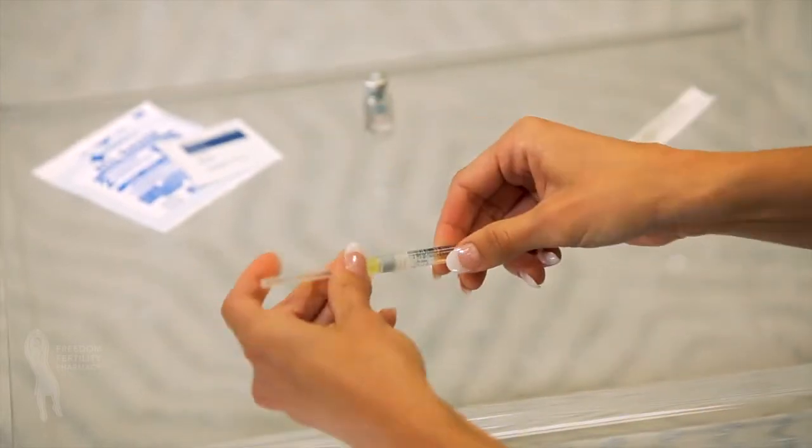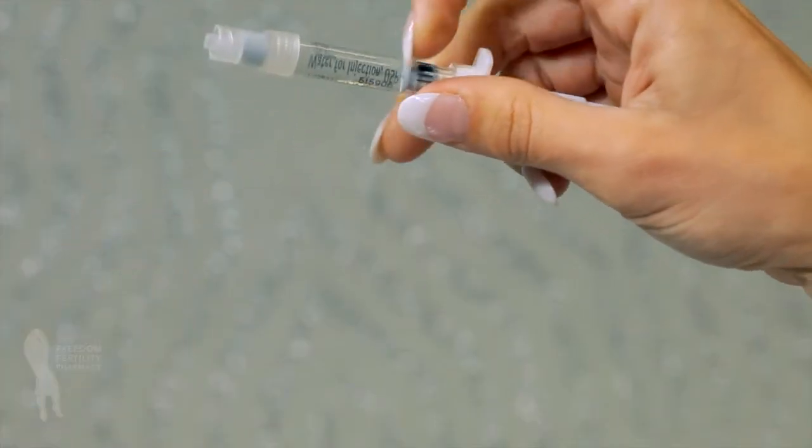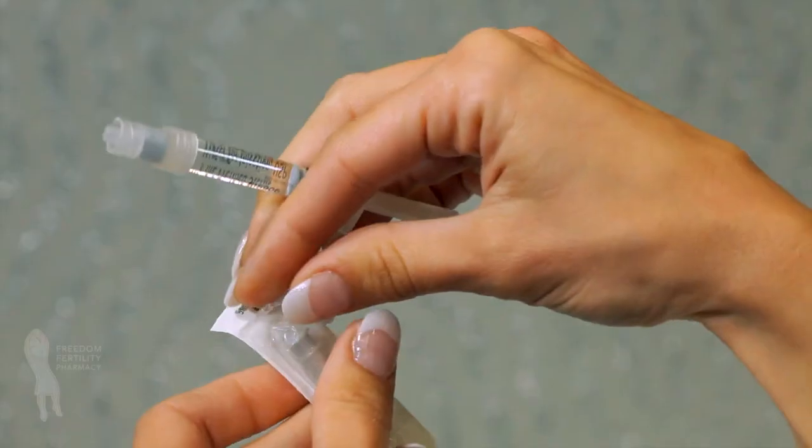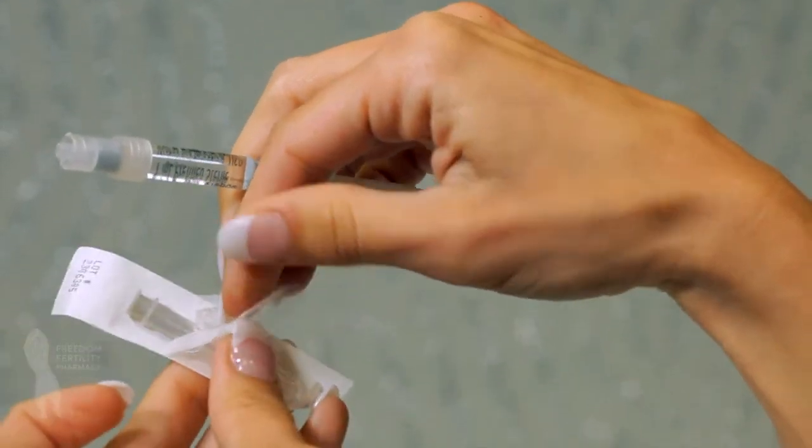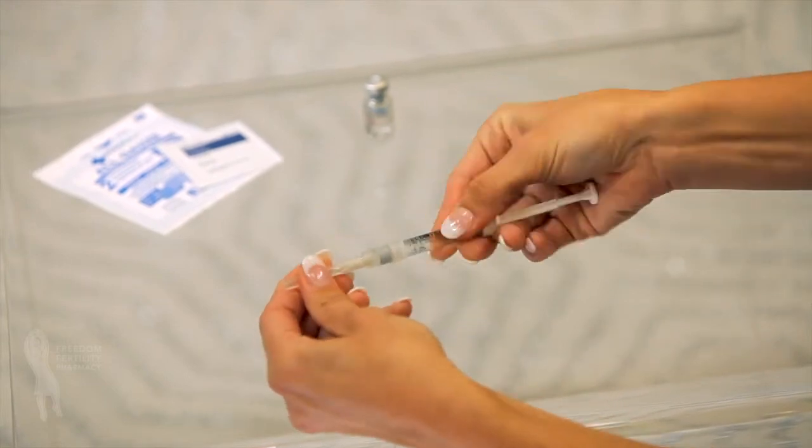Do not touch the needle or allow it to touch any surface. Detach the mixing needle and remove the wrapping from the gray injection needle. Twist the gray injection needle on the syringe and remove the needle cover.